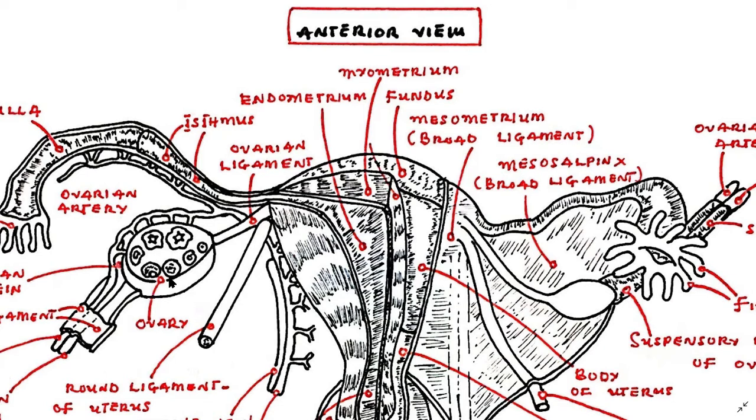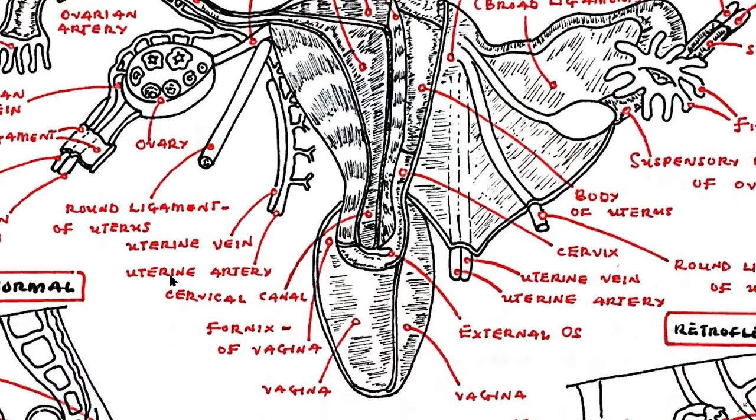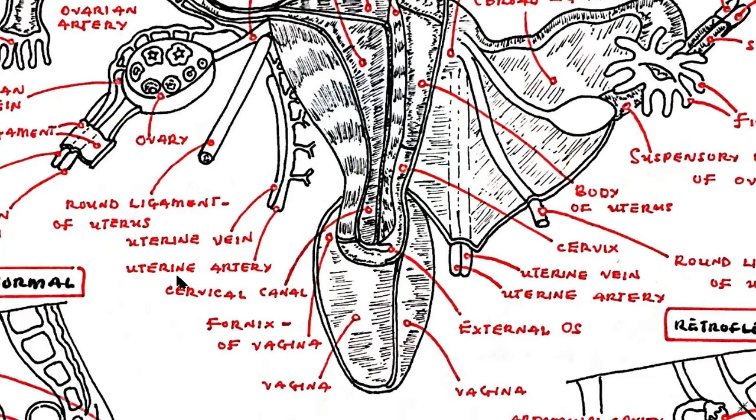The external sex organs are also known as the genitals, and these are the organs of the vulva which include the labia, the clitoris, and the vaginal opening. The vagina is connected to the uterus at the cervix.